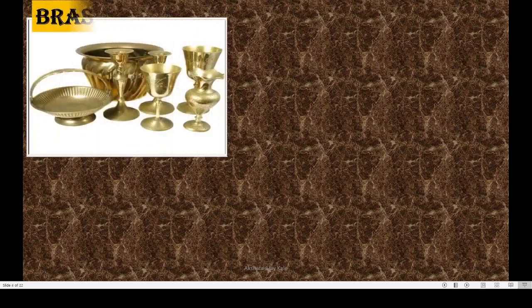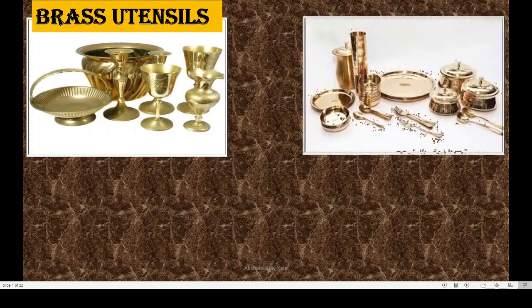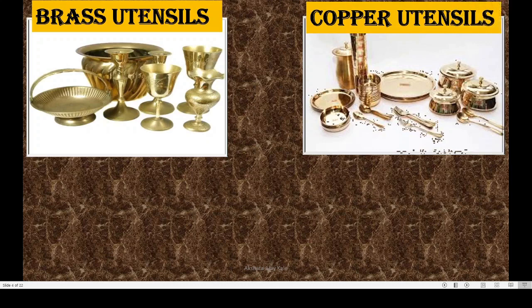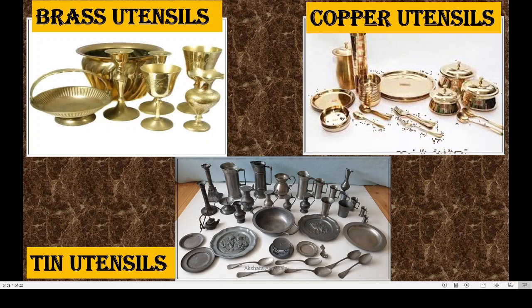Dear children, see this — these are called brass utensils, a metal utensil named brass. See this — copper utensils, these are made up of a metal called copper. And these are tin utensils — one more metal called tin.